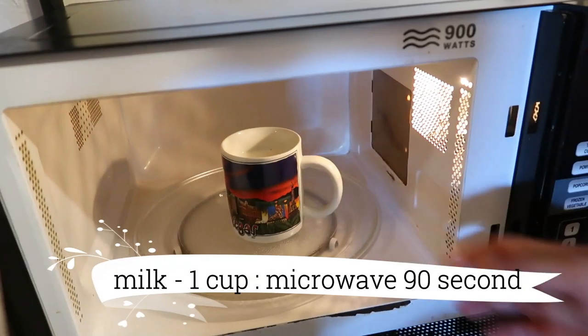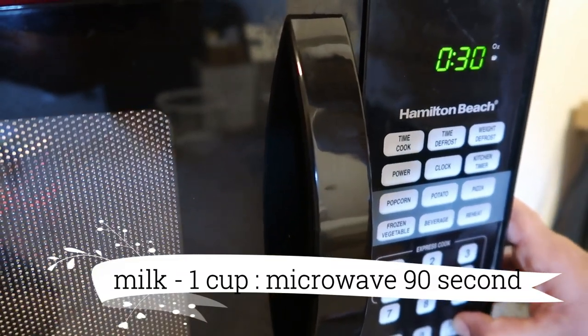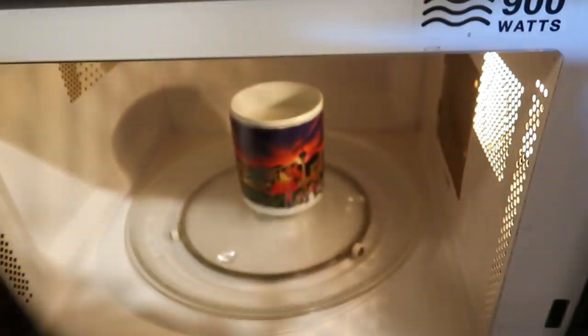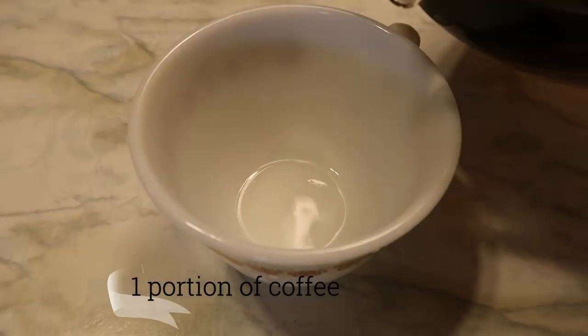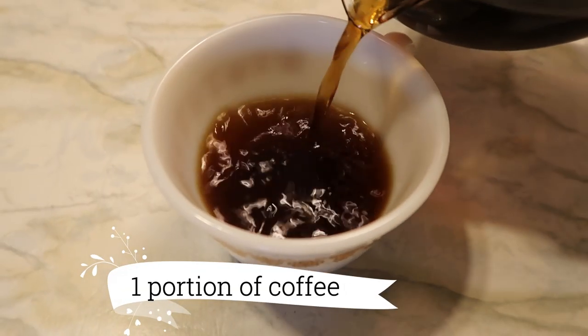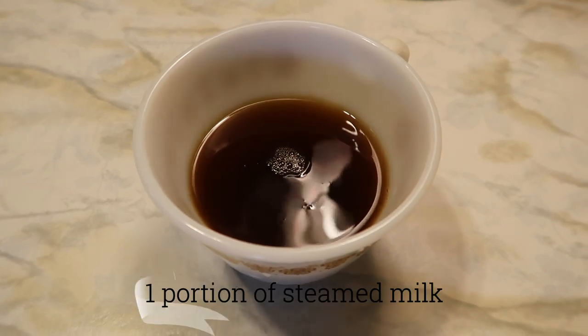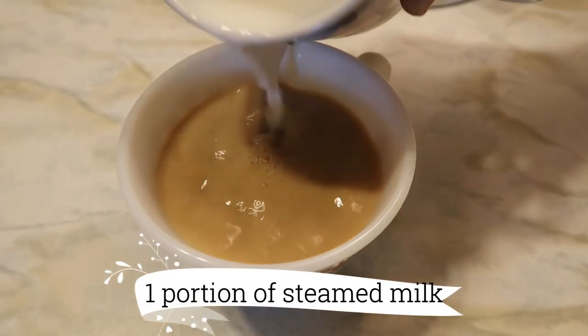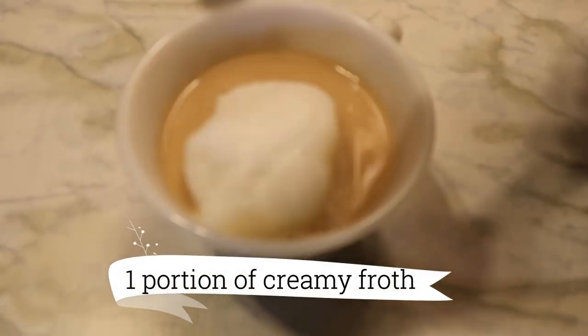Meanwhile, heat one cup of milk in the microwave oven for about 90 seconds. In a cup, add one portion of coffee, one portion of steamed milk, and one portion of creamy froth.